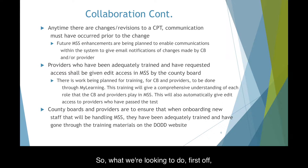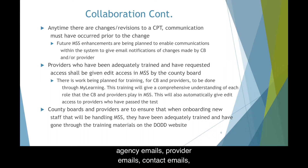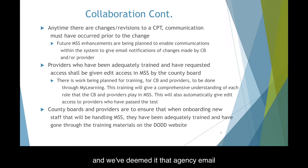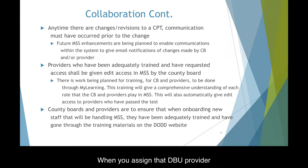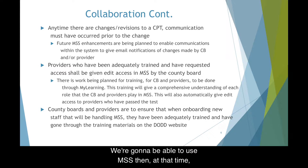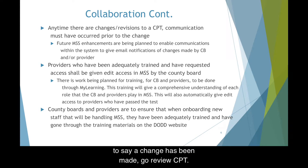What we're looking to do first is bring in a provider email. In PSM, we already have agency emails, provider emails, and contact emails. We're going to use the agency email, since it's not currently being utilized for other communication flows, and pull it into where you assign the DBU provider. When you assign the DBU provider, that email address will come through, MSS will store it, and when a change gets made that affects the MRC area, it will email the provider to say a change has been made — go review CPT.